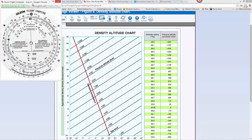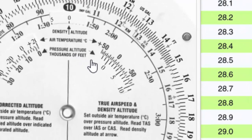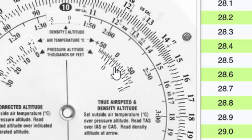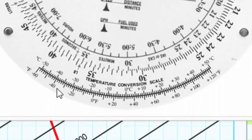Another way to solve this question is by using a flight computer. Your flight computer has a density altitude conversion scale in one quadrant. You set your pressure altitude in thousands of feet — we've calculated our pressure altitude to be 3,500 feet, so between 3,000 and 4,000 — and put that across from your outside temperature.